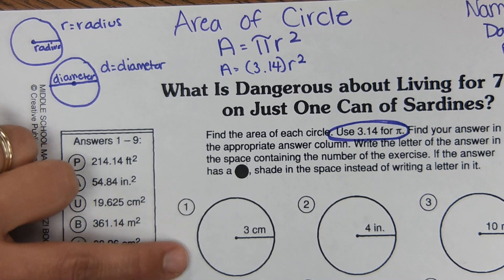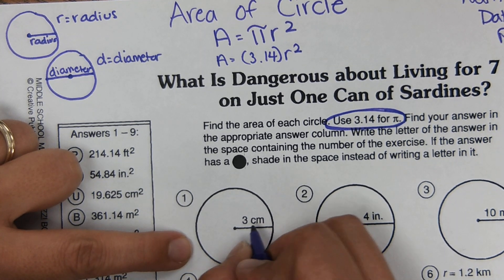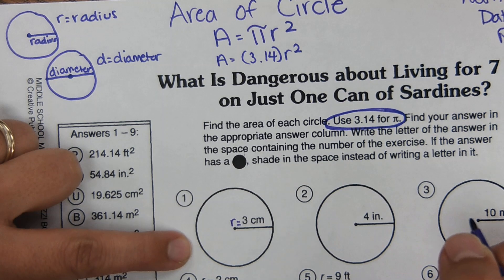So number one, it shows us a circle. It shows us halfway across. So that would be radius. So R equals three centimeters.